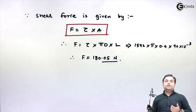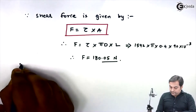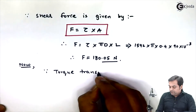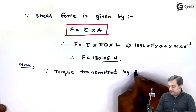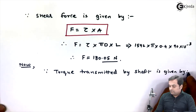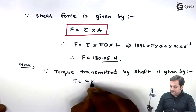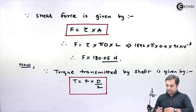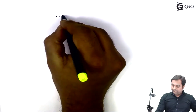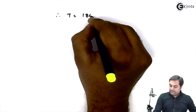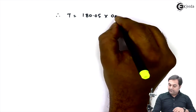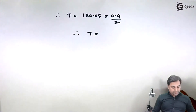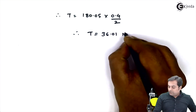Now after getting shear force I can easily calculate the value of torque. The torque transmitted by the shaft is given by T = shear force × radius, where radius = diameter / 2. Therefore T = 180.05 × (0.4 / 2). This gives torque T = 36.01 Newton meter.